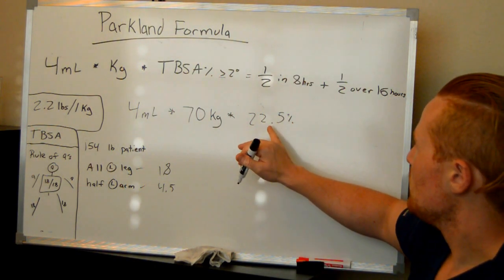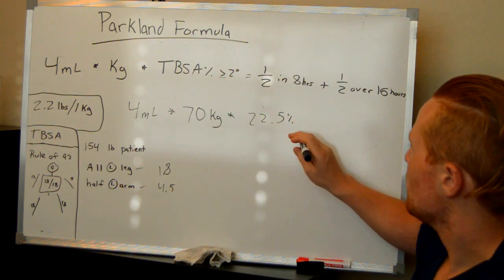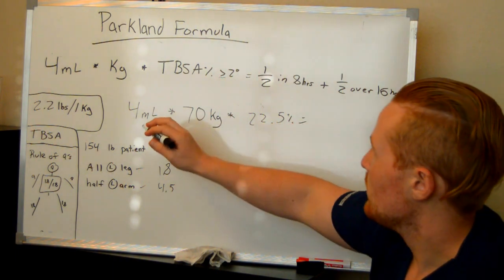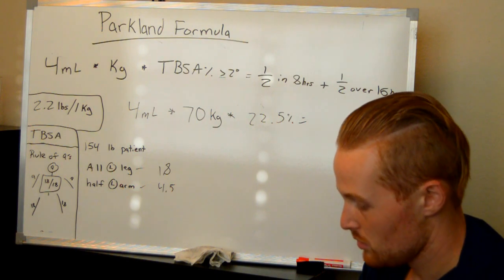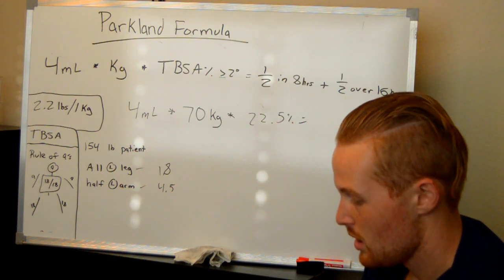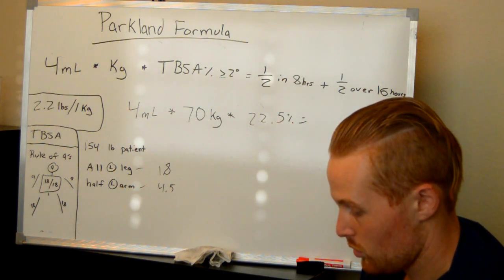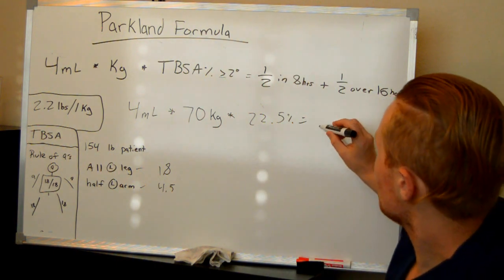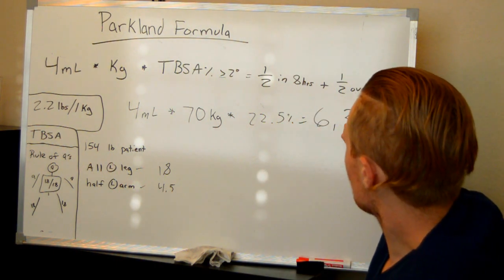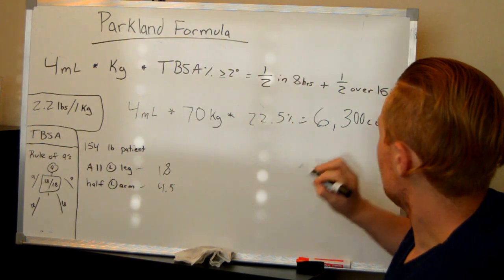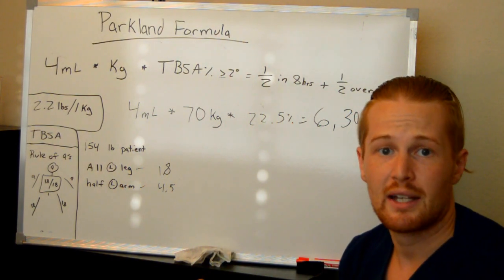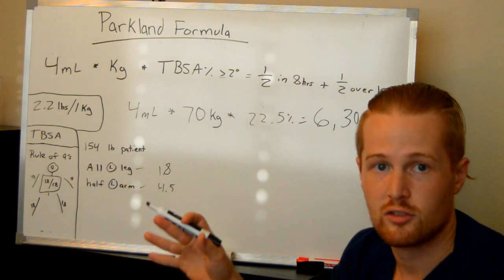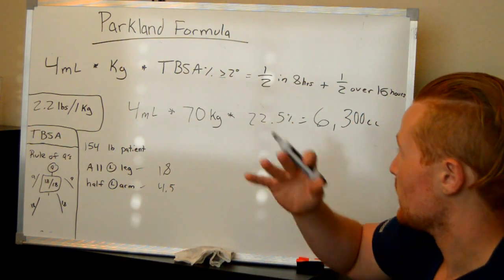And so what we can do here, with the 22.5, the 70 and the 4, we can go ahead and do the math. So 70 times 4 times 22.5, that gives us 6,300 cc's of fluid. And this fluid is typically lactated ringers, because it has all kinds of supplements and vitamins that the patient is going to need, or electrolytes.